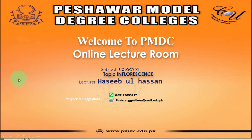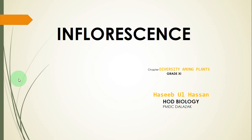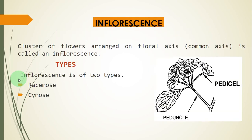Bismillahirrahmanirrahim, and welcome to PMDC online lecture room. Dear students, in this video lecture we will discuss inflorescences from chapter 'Diversity Among Plants.' Inflorescences mean the cluster of flowers arranged on a floral axis or common axis — the arrangement of a group of flowers on the main axis or common axis.